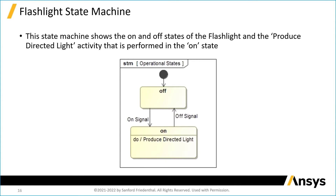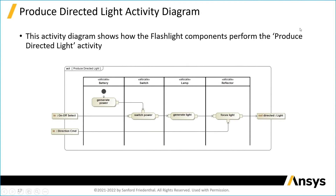So let's look at produced directed light on the next slide — and that's what you're looking at here. This is an activity diagram for produced directed light that shows the next level of decomposition of those functions, or actions in SysML speak, and these are the different actions performed by the different parts of the system.